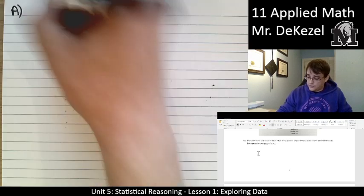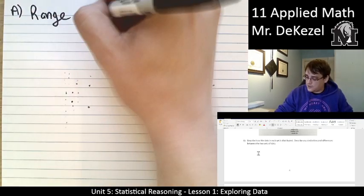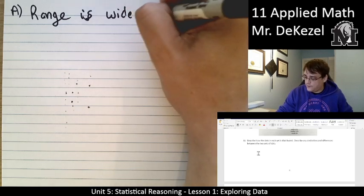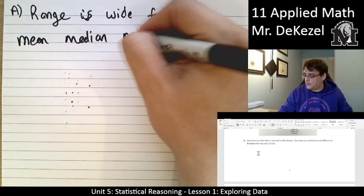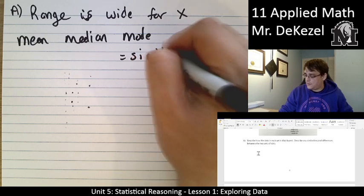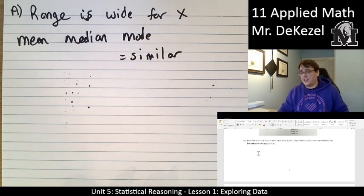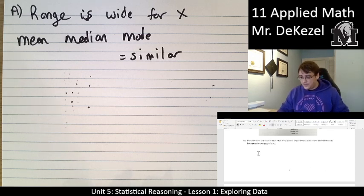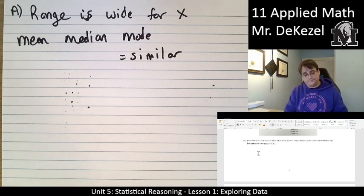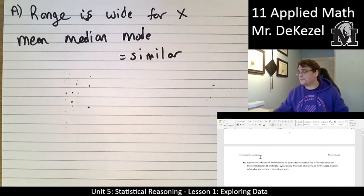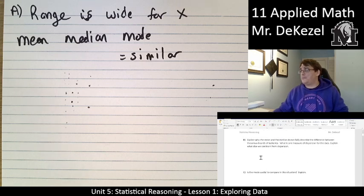The range is wide for X. The mean, the median, and the mode are all the same, or similar. And it really depends on what you want. Do you want the chance to get a ridiculously long-lasting battery? Then maybe you go for brand X. If you want to know more exactly what you're going to get, maybe you go for brand Y. B. Explain why the mean and the median do not fully describe the difference between these two brands' batteries. What is one measure of dispersion for the data? Explain what else we can learn from dispersion.